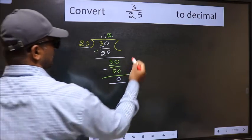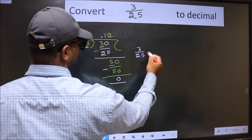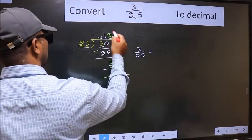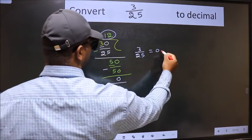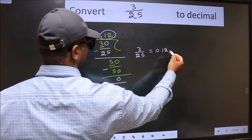Therefore, decimal of 3 by 25 is this one. 0.12 is our answer.